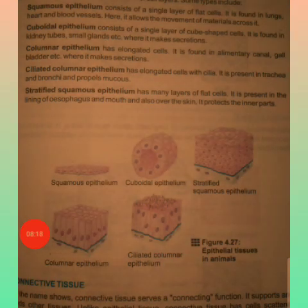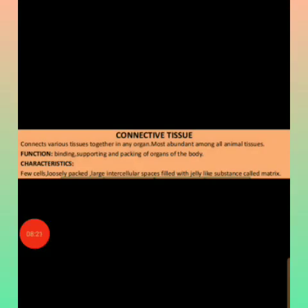Our next topic is connective tissue. As the name indicates, it performs a connecting function — it supports and binds the other tissues. Connective tissue consists of cells that are loosely packed together with space between them, and these loosely packed cells are present in a jelly-like material called the matrix.